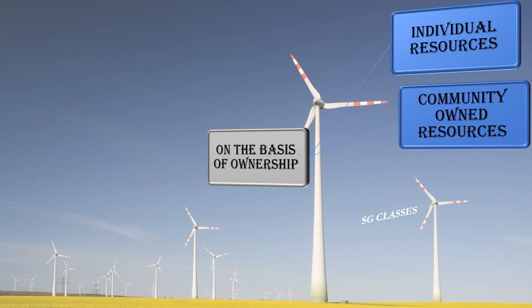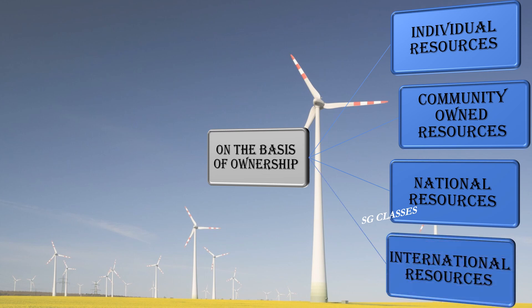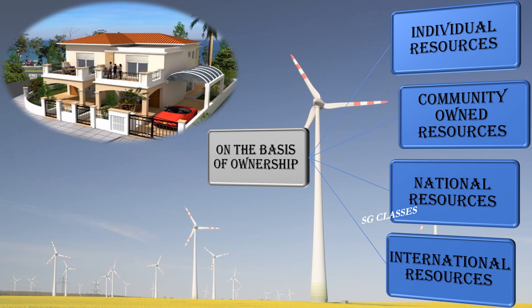Community resources are a group of assistance programs provided to members of the community for free, such as public parks and gardens that anyone can access. National resources belong to the nation, and the country has legal power to acquire even private property for public good. International resources are those lying beyond 200 kilometers of the exclusive economic zone in the oceans, and no individual country can use them without permission of international agencies.